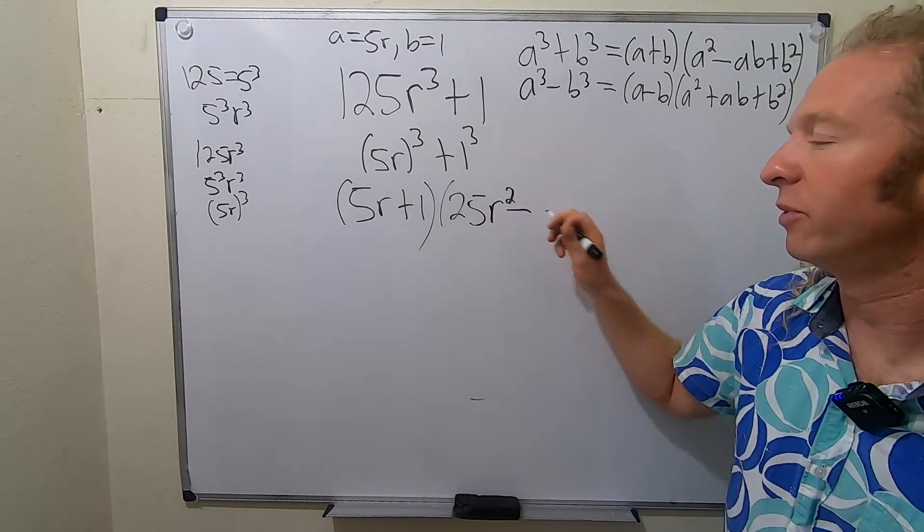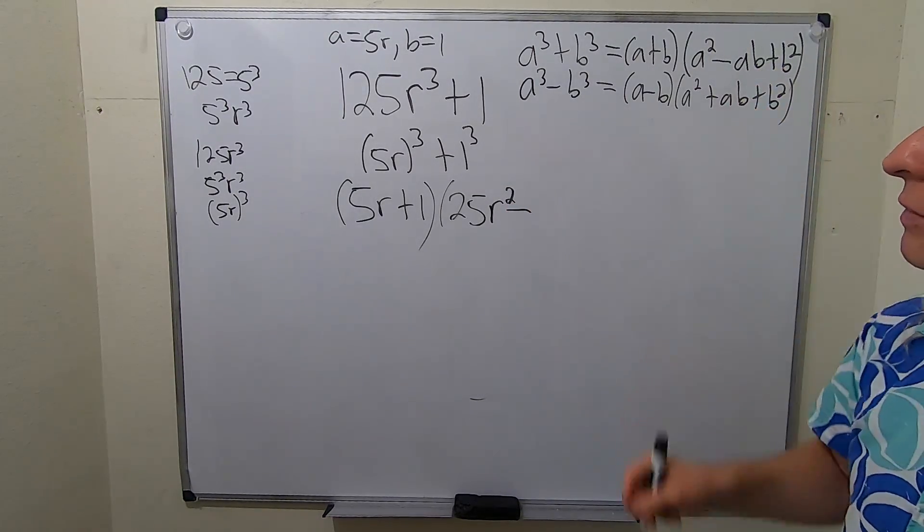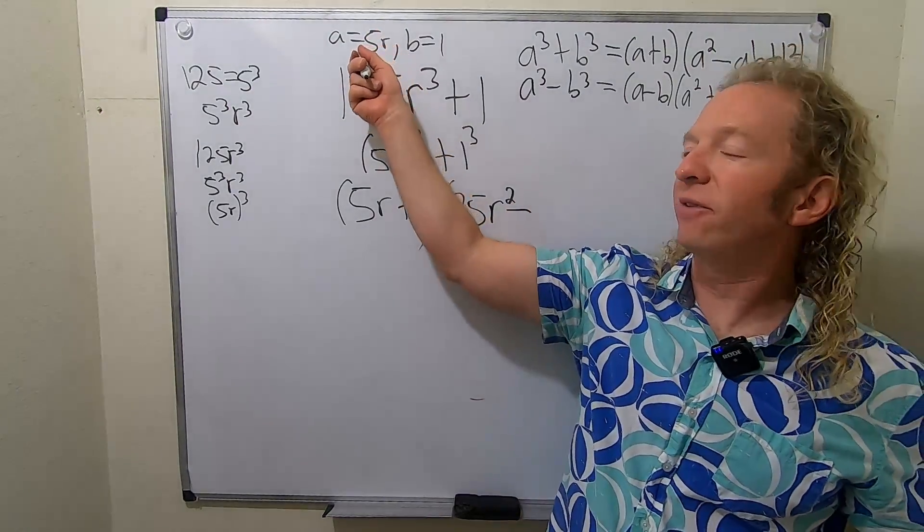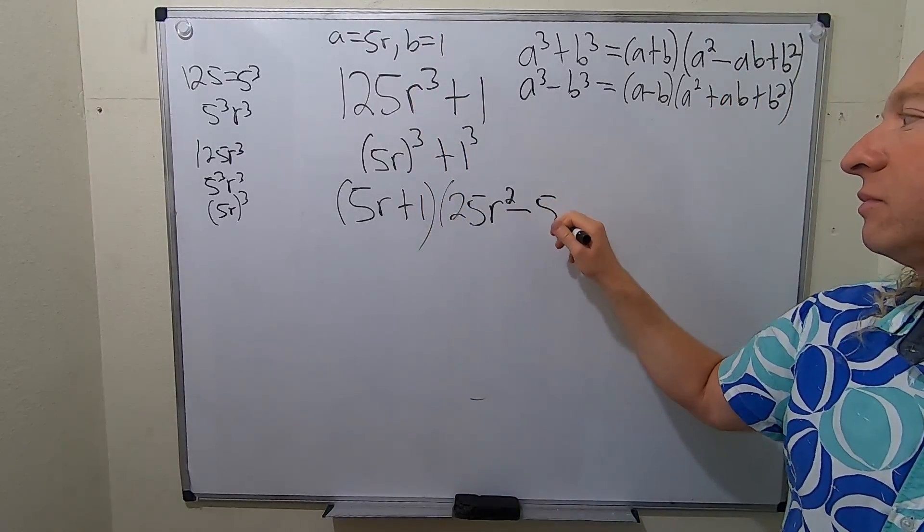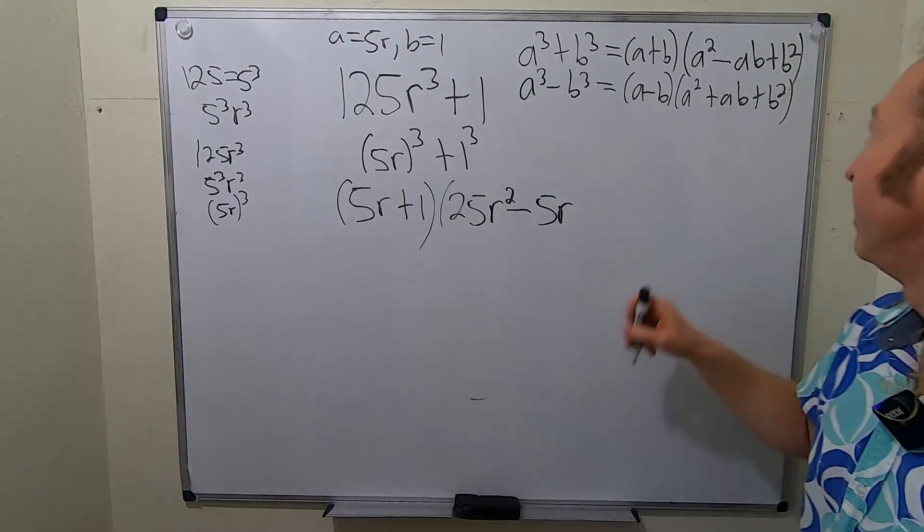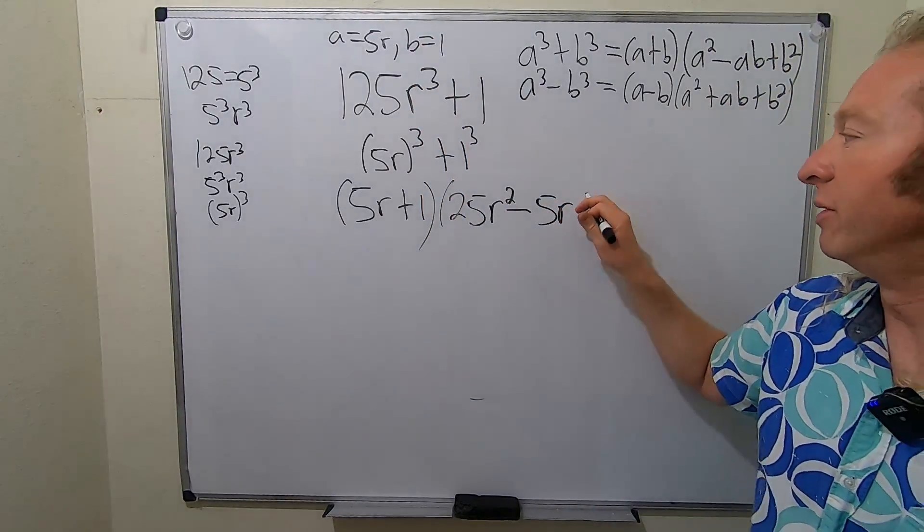So minus. Be really careful with these. AB. So AB is 5R times 1. So that's just 5R. That's just 5R. And then 1², because B is 1, so plus 1.